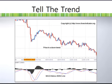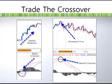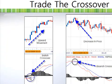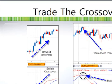Besides telling the trend, we could trade the MACD crossover. You can see that when the red color line crosses above the blue color line, it's called a bullish crossover, and this tells us that the price is going to move up. After the crossover the price starts to move up further. Similarly, when the red color line crosses below the blue color line, the price is moving down and you could make some profits from that.